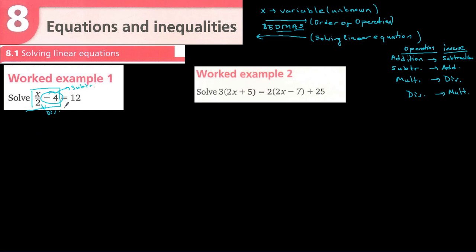When solving, we follow the inverse order. So firstly we solve the subtraction problem. For x/2 minus 4 = 12, we need to get rid of the minus 4. Since it is subtraction, when we send it to the other side it becomes addition — so x/2 equals 12 plus 4.